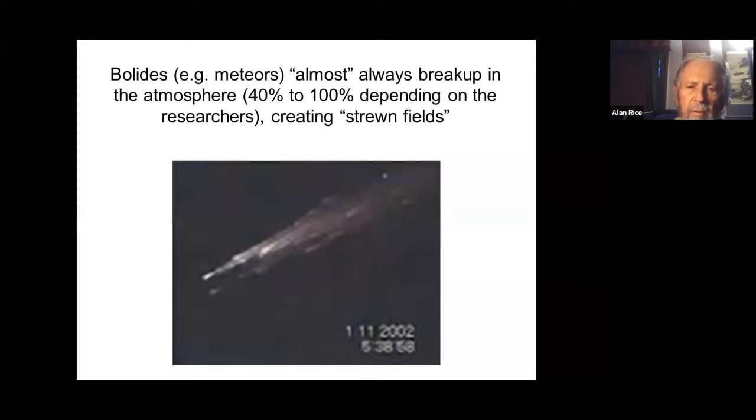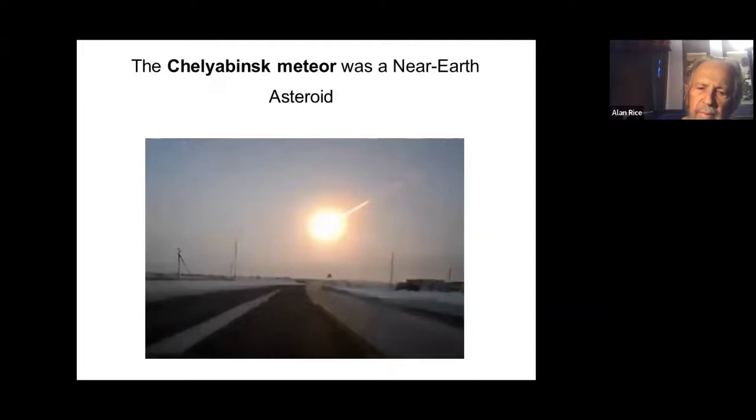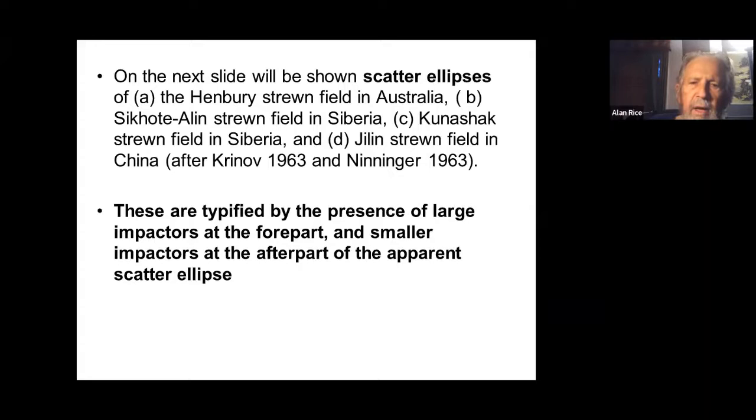Meteors almost always break up in the atmosphere. There are reasons for that, but that's a whole other lecture. They create strewn fields. The Chelyabinsk meteor a couple of years ago in Russia turned into a fireball, broke up—they found little bits and pieces here and there, but nothing remnant. The damage was caused by the air burst coming into the Earth's atmosphere.